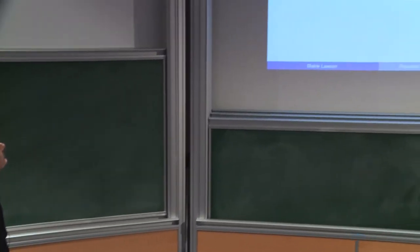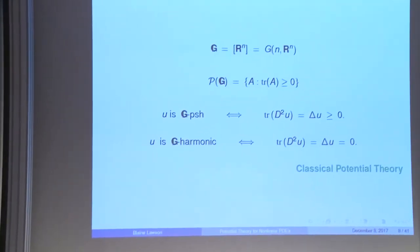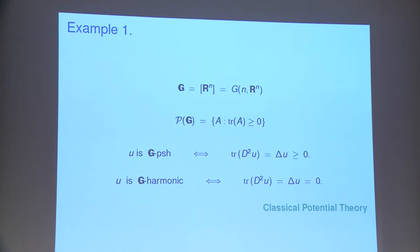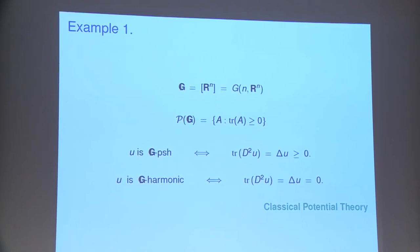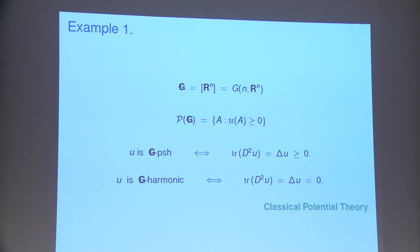The simplest example: this G set consists of just one subspace, the whole space itself. These matrices or quadratic forms are merely assumed to have a non-negative trace. The trace of second derivatives is the Euclidean Laplacian, and the request of being PSH is that the Laplacian is non-negative — these are subharmonic functions.